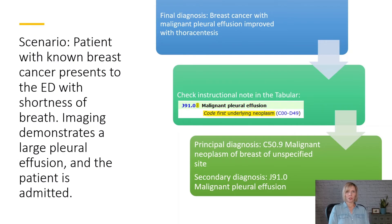For this scenario, a patient with known breast cancer presents to the ED with shortness of breath. Imaging demonstrates a large pleural effusion and the patient is admitted. The final diagnosis is breast cancer with malignant pleural effusion, improved with thoracentesis. In this case, even though the admission was specifically for treatment of the pleural effusion and nothing was done for the malignancy, the malignancy will be sequenced as the principal diagnosis because we must follow the instructional note telling us to code first the underlying neoplasm. The code for the malignant pleural effusion will be sequenced as a secondary code.